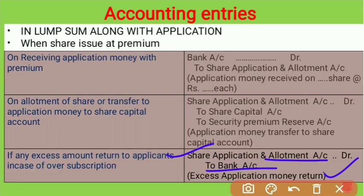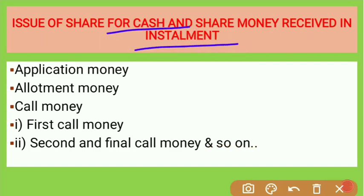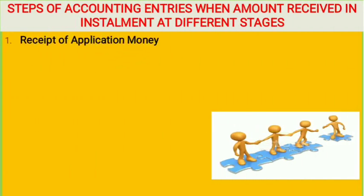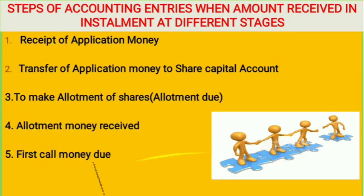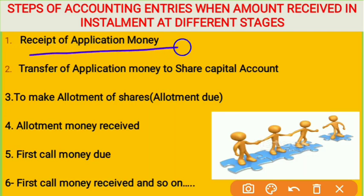Now the next case is issue of share for cash when share money is received in installments. First the application money is received, then allotment money, then call money — which can be a first call, second call, or final call. When company receives money in installments, step-wise entries are needed. First the application money is received.